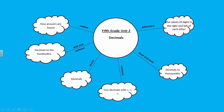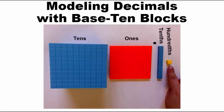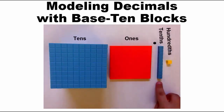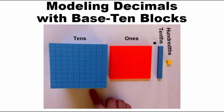In the first segment of the video, let's investigate the place value system and the values of the digits to the right and left of each other. To model problems with decimals concretely, we will use base 10 blocks. The unit cube will represent the hundredths, the rod will represent the tenths, the flat will represent the ones, and the large cube will represent tens.